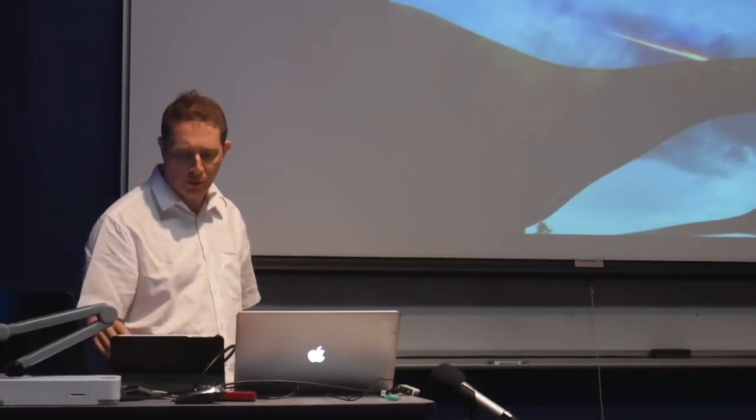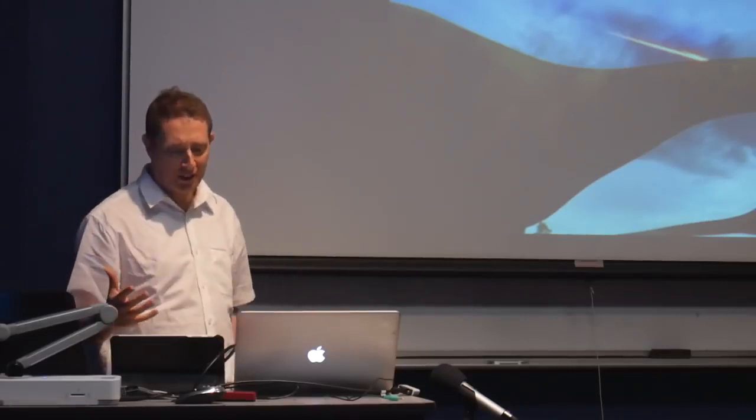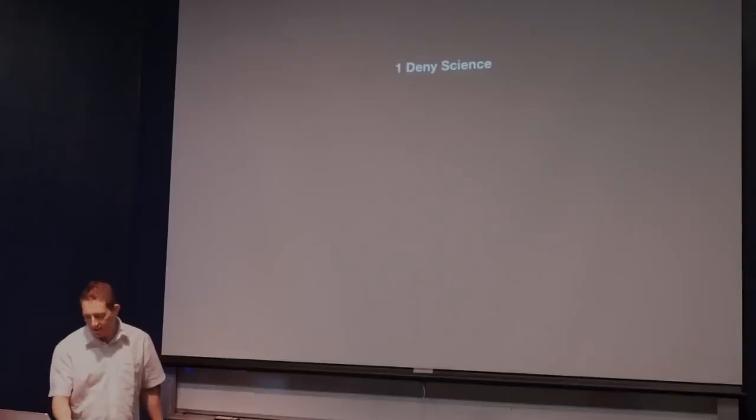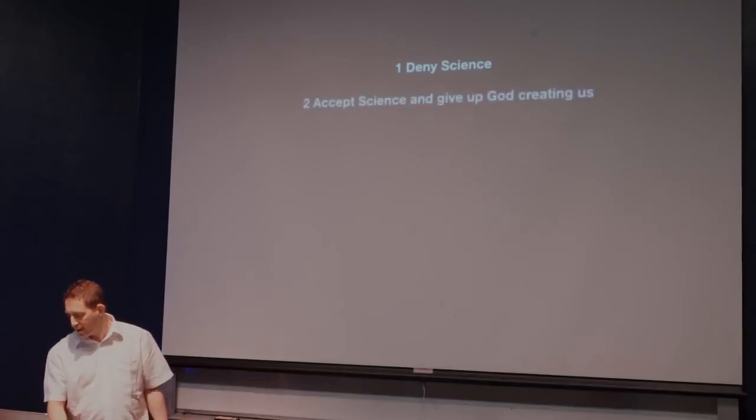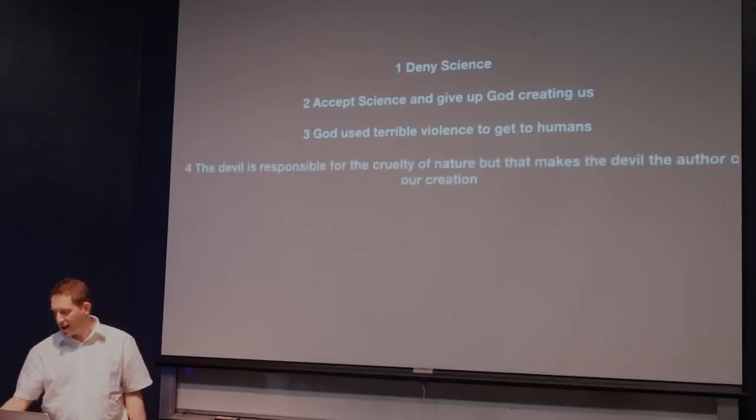If the fall of Satan is responsible for animal suffering before the fall, then that makes Satan the author of our creation. So this puts theologians in a terrible bind. They either have to: one, deny the science, or two, accept the science and give up the idea that God created us, or three, embrace the science, but that would give us a God that uses asteroid impacts and terrible violence to get to us, or four, claim that the cruelty of nature is down to the devil, but that makes the devil the author of our creation.